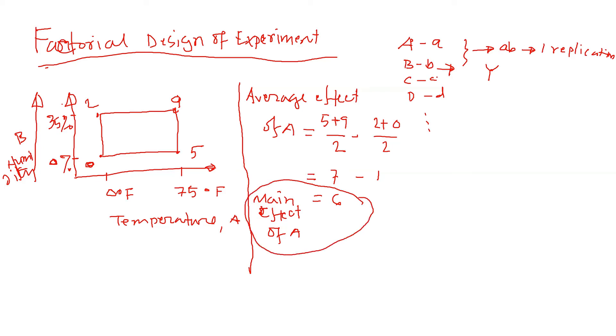Similarly, we can calculate the main effect of B, which is the average effect of B. We calculate the total B high values - the B high values are 2 and 9.